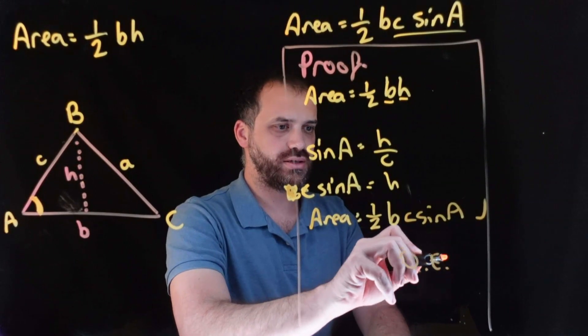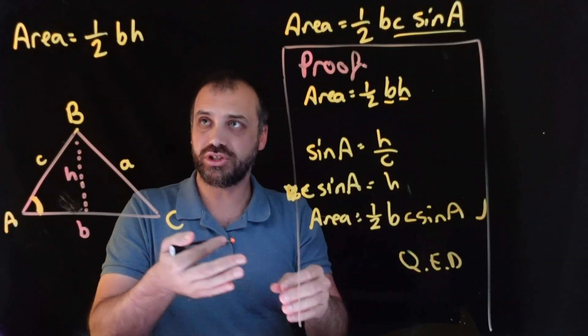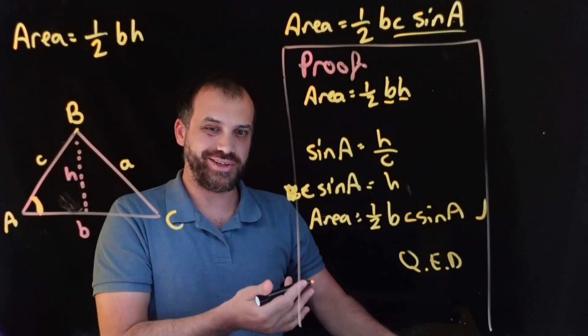So, proven QED, we're happy. The area of a triangle is half B, C, sine A. It's really just this formula in disguise.